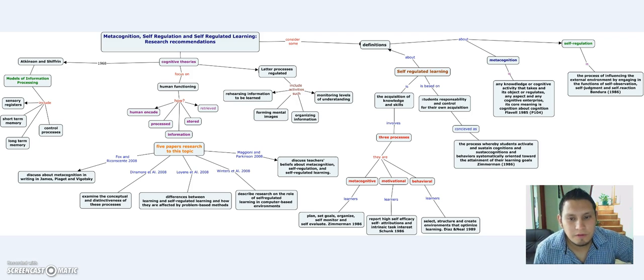There are three processes involved in self-regulated learning. The first one is about metacognition. The second is motivation. And the third is behavior.